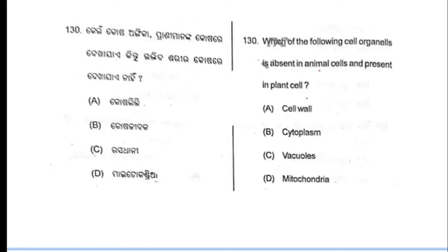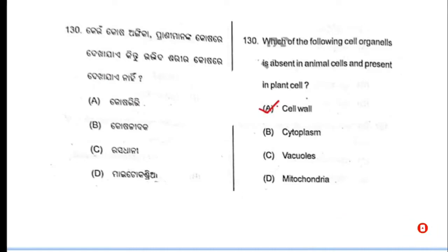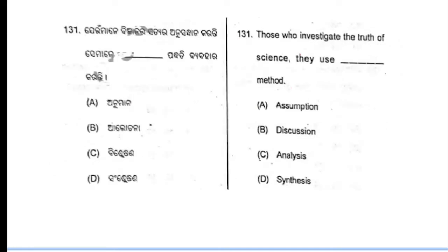Question number 130: which of the following cell organelles is absent in animal cell but present in plant cell? The correct answer is cell wall — option number A. Cell wall is absent in animal cells. Question number 130, option number A is the correct answer.